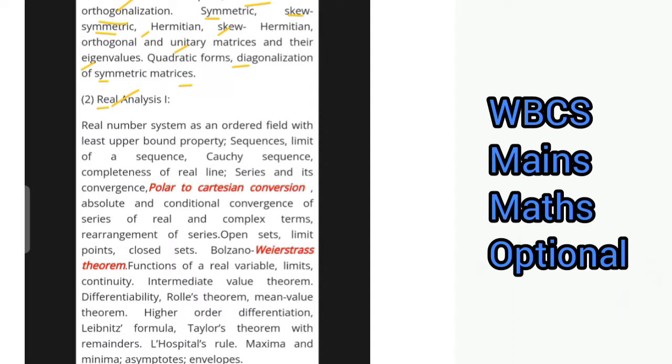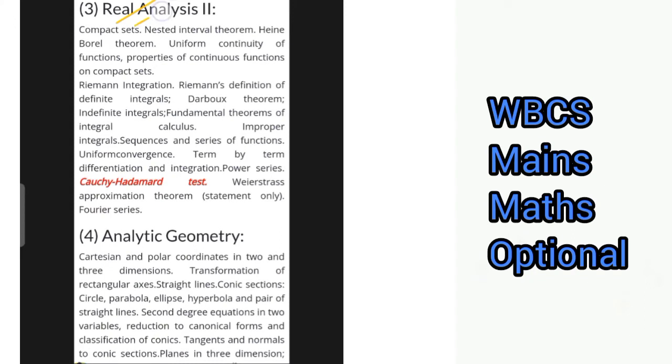The next part is based on Real Analysis Part 1, with the real number system as an ordered field with least upper bound property, sequences, limit of a sequence, Cauchy sequence, completeness of real line, series and its convergence, absolute and conditional convergence of series of real and complex terms, rearrangement of series, open sets, limit points, closed sets, balls and Bolzano-Weierstrass theorem. Then functions of real variable, limits, continuity, intermediate value theorem, differentiability, Rolle's theorem, mean value theorem, higher order differentiation, Leibnitz formula, Taylor's theorem with remainders, L'Hospital's rule, maxima and minima, asymptotes, and envelopes.